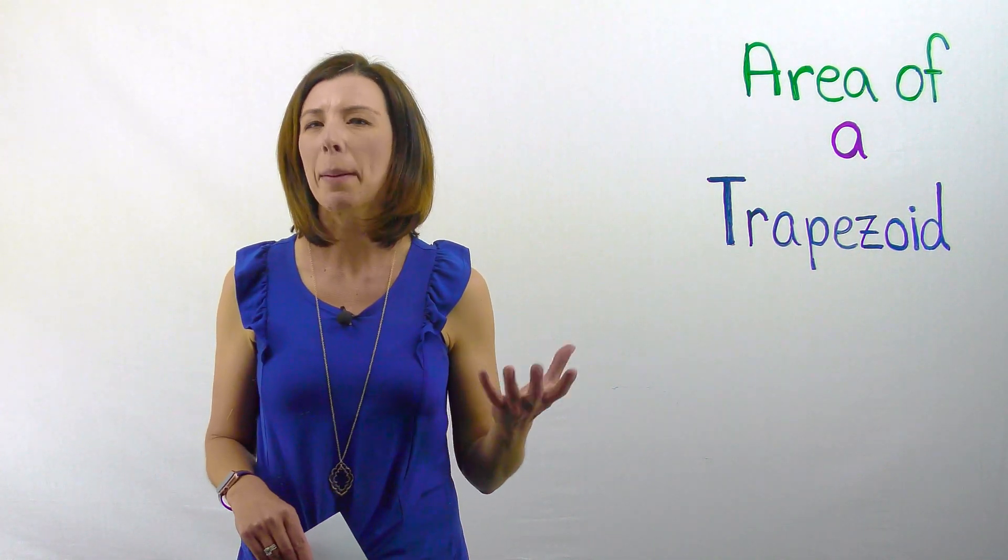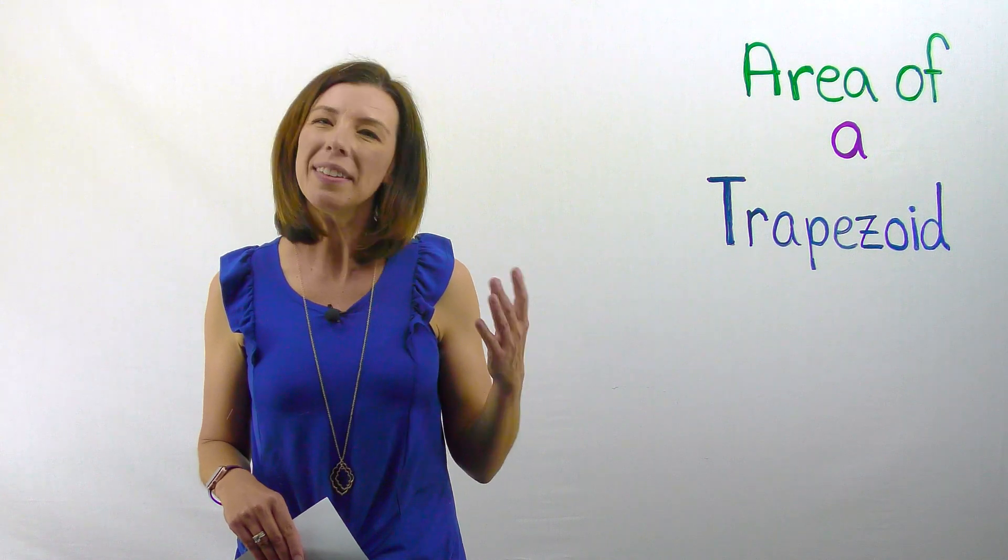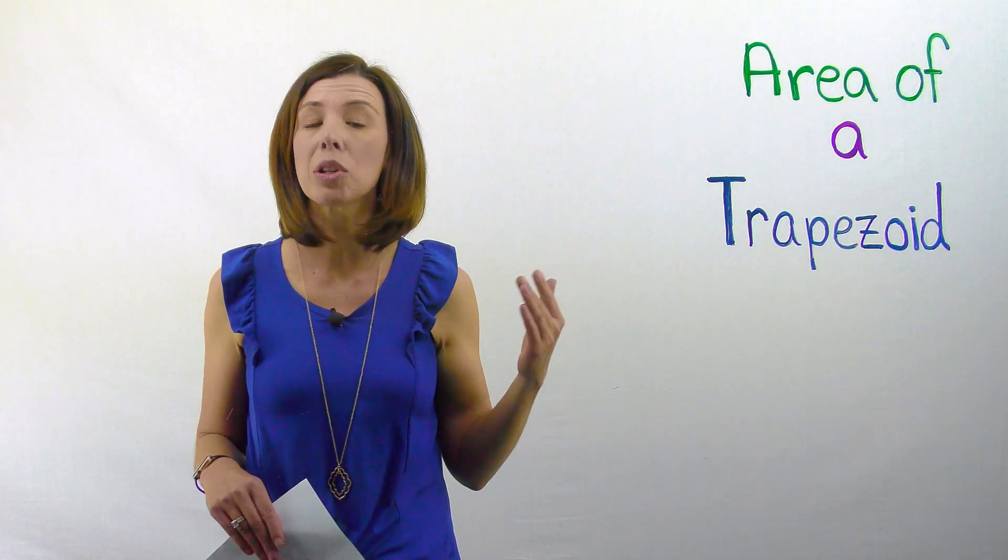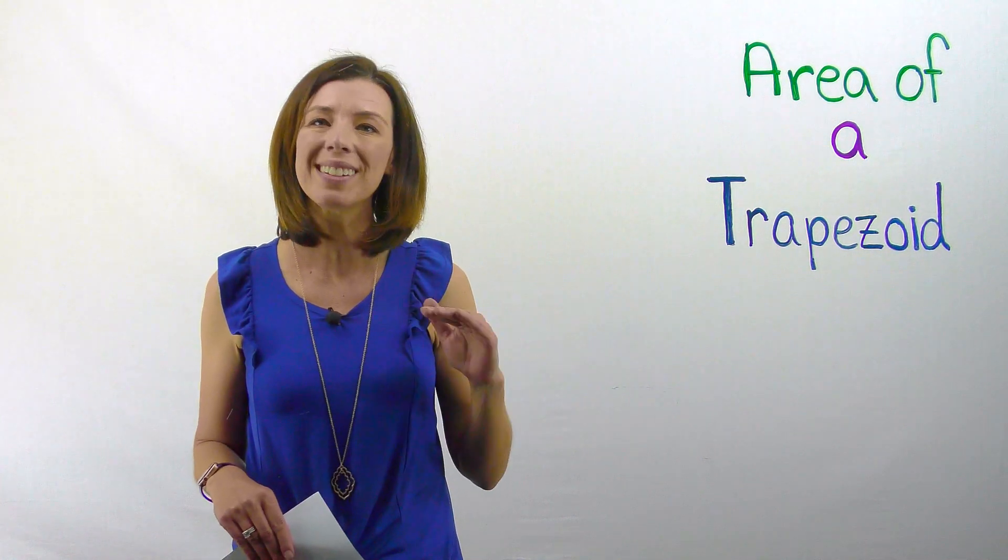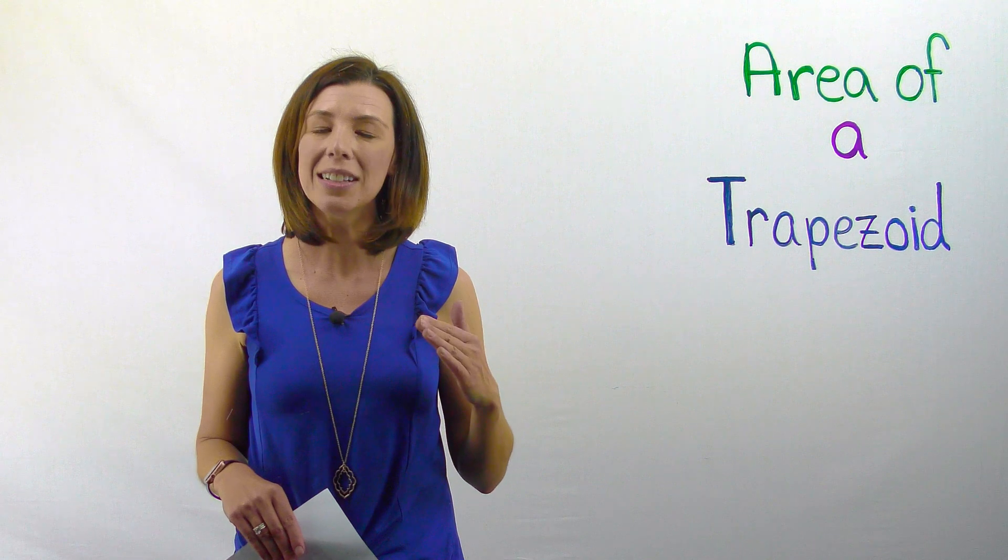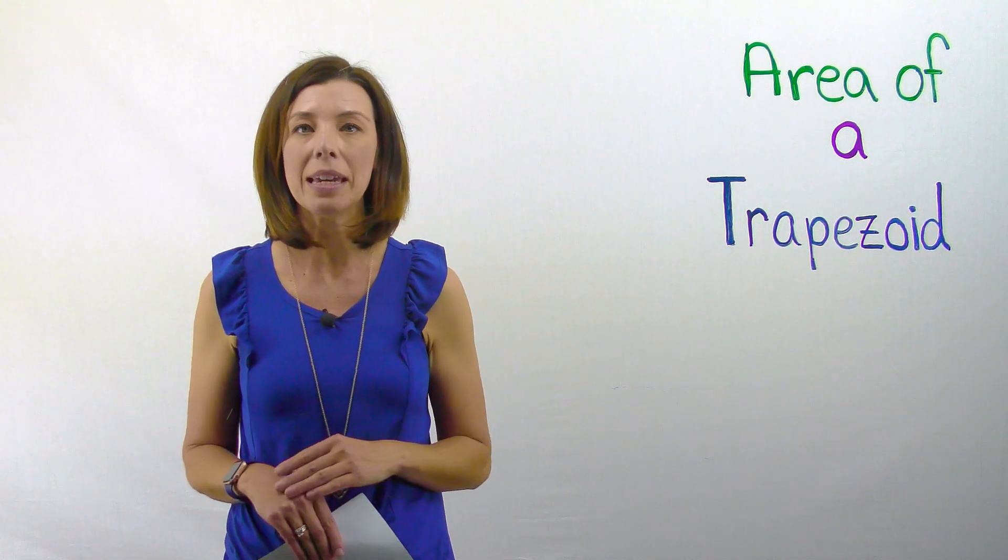First I want you to think about what does a trapezoid look like. Remember these are the shapes where you only have one set of parallel lines. So it's a quadrilateral with just one set of parallel sides. So the other two sides, the opposite sides, will not be parallel.